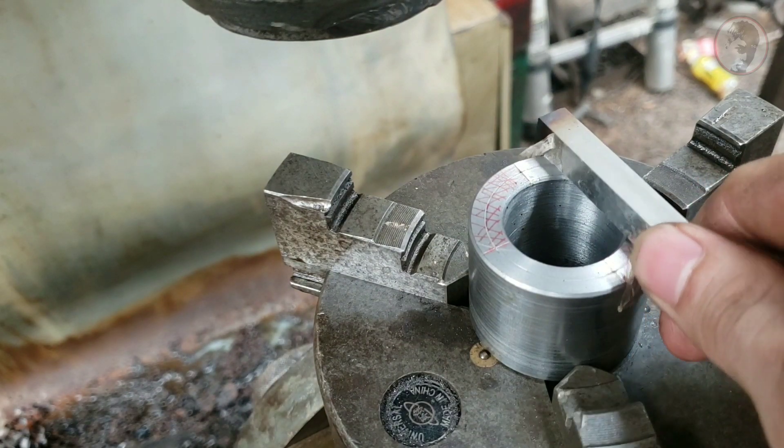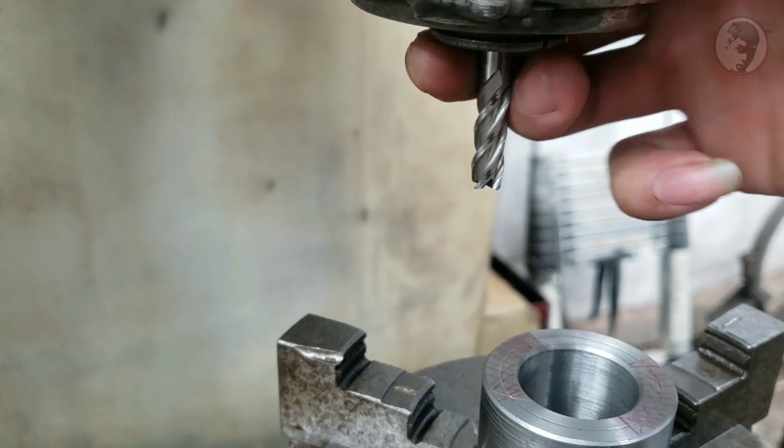Sau khi cân chỉnh đường thẳng của phôi thẳng với băng máy thì mình sẽ tiến hành phai bỏ đi 2 phần mà mình đã đánh dấu.